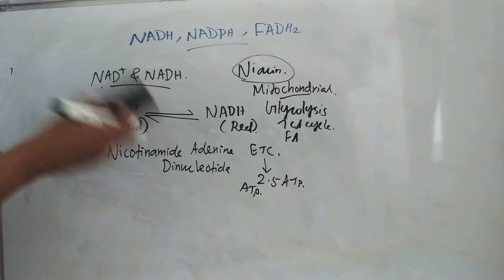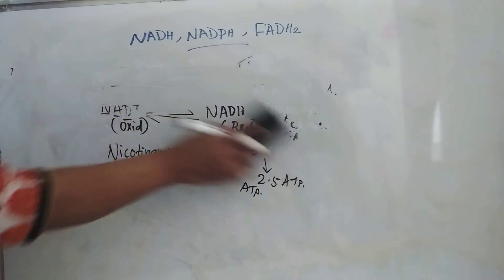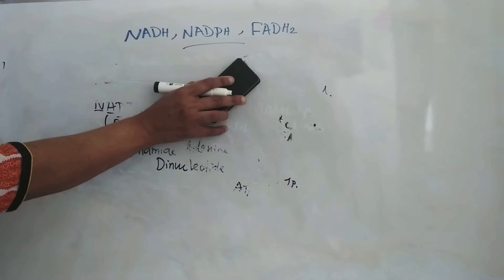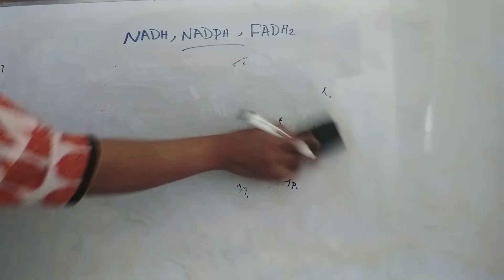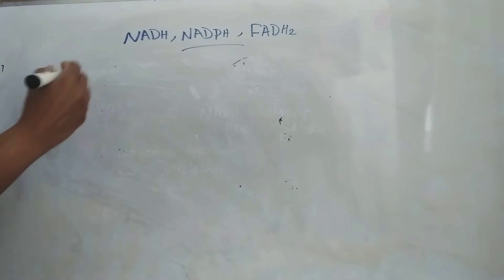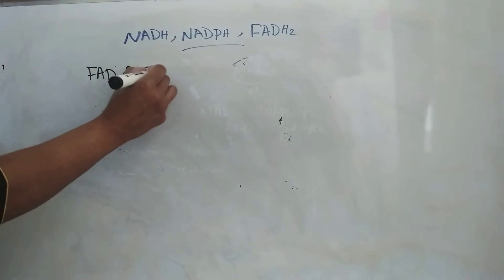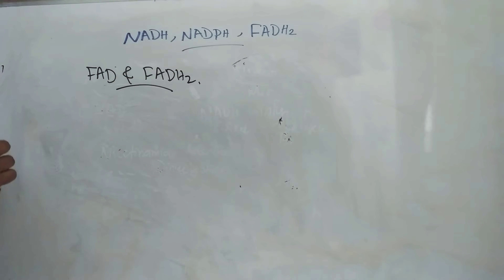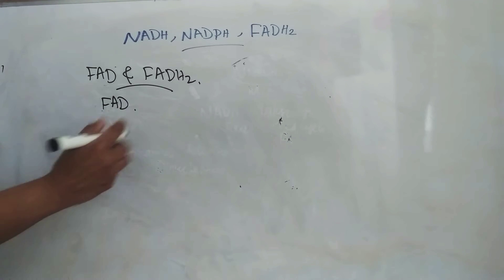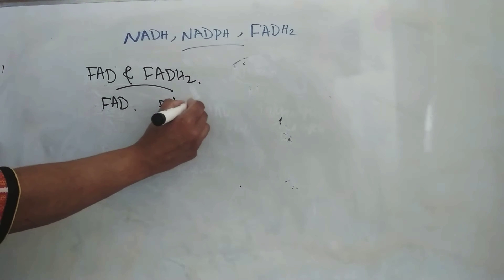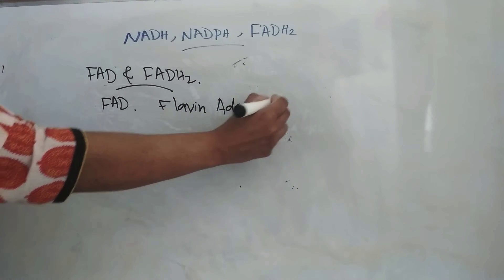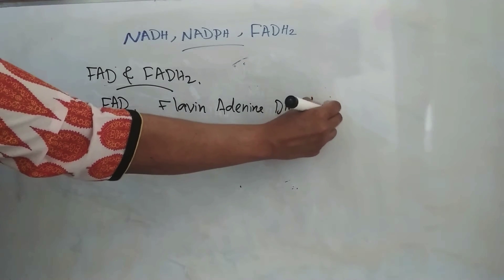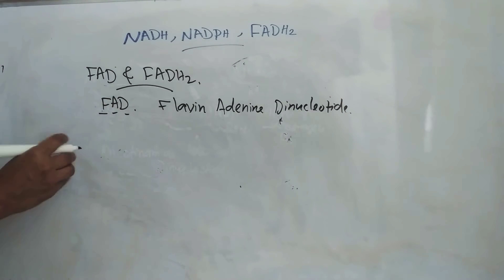Next we will see FAD and FADH2. This FAD, it is Flavin Adenine Dinucleotide.